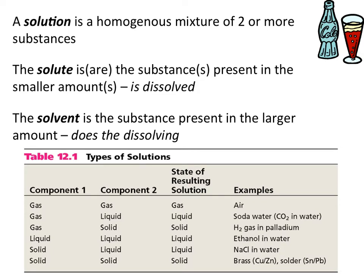The solute, or solutes, are the things that are dissolved into what is known as the solvent. Usually the solute is the thing that's present in the smaller amount. The solvent is the substance that's actually doing the dissolving of the solute. So a solution is a homogeneous mixture that consists of two or more substances, at least one being a solute and at least one being a solvent.